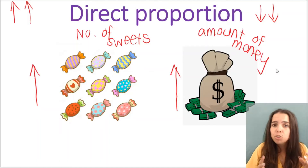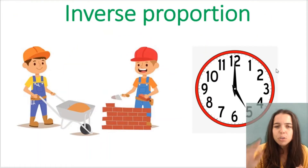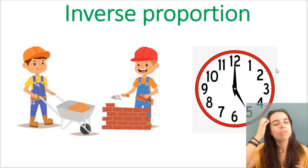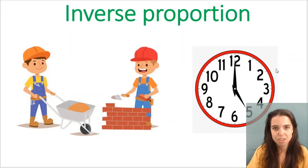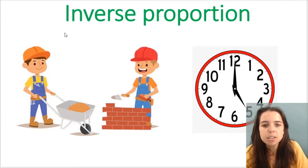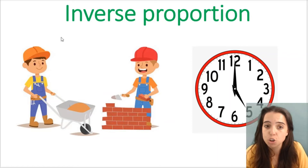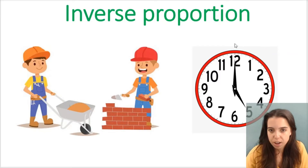Remember, it's not only increase and increase — it could be decrease and decrease. Let's look at inverse. Inverse is always trickier to find examples of. A very common example is the number of builders or people it takes to complete a job versus the time taken or time required to complete that job.